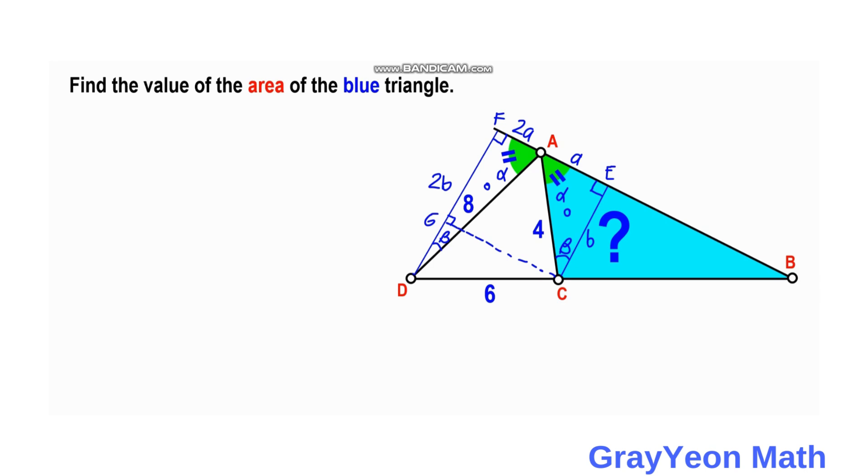So CG is equal to 3A, the sum of these two lengths 2A and A. And this length GD gives us 2B minus B, and that is B.